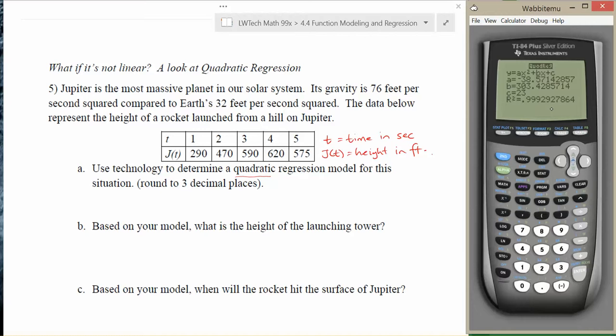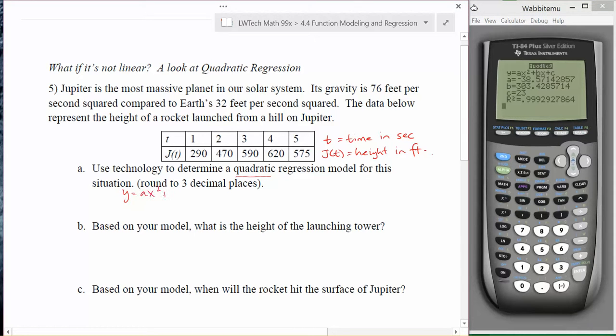So in the first problem here, it asks us to use technology to determine a quadratic regression model for this situation, round to three decimal places. We're going to use this y equals ax squared plus bx plus c, and then we're going to rewrite it with those a, b, and c values. So negative 38.571x squared plus 303.429x plus 23. And there's my best fit equation regression model that's a quadratic equation.